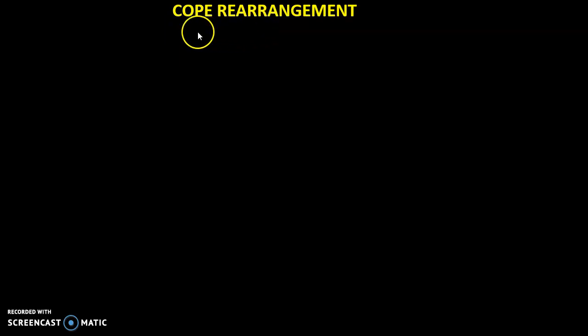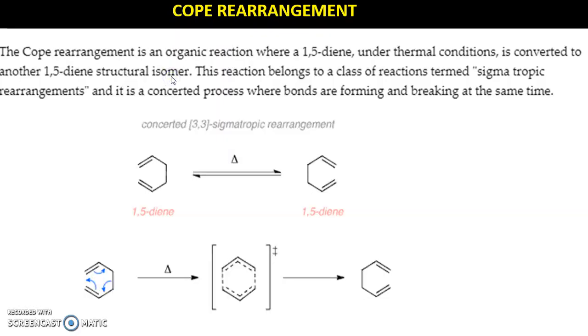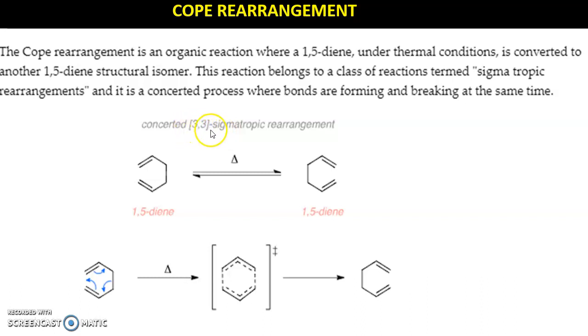Now we will move to a very famous reaction: the Cope rearrangement. It is a sigmatropic rearrangement, and specifically it involves a 3,3 sigmatropic rearrangement. Before we have seen 1,3 shift, 1,5 shift, and 1,7 shift. Now, a 3,3 sigmatropic rearrangement means there is a shift of an atom from the 3 position to another 3 position. Looking at this 1,5-diene system, if we start numbering from this carbon: 1, 2, 3 on one side and 1, 2, 3 on the other side.